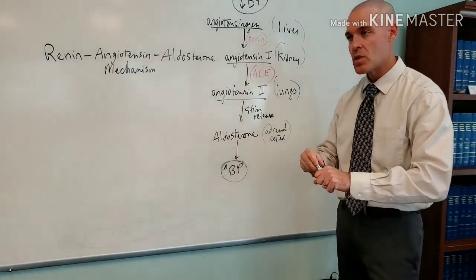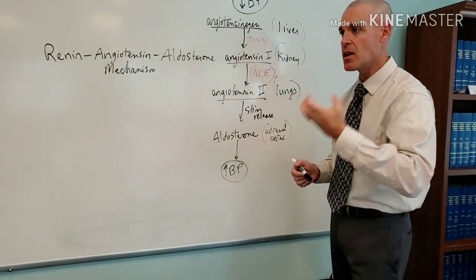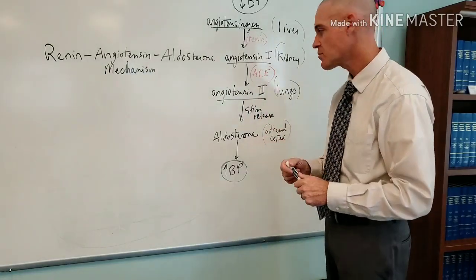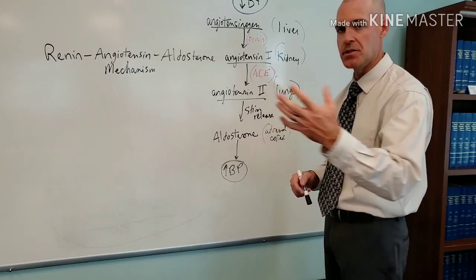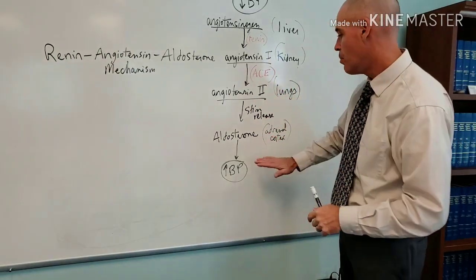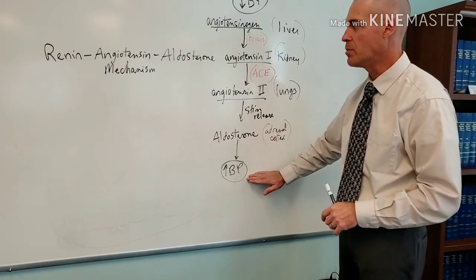Some other things happen too. There's a triggering of thirst, and you taking in water helps increase blood pressure as well. That would be secondary, but it does happen. It triggers thirst in the hypothalamus. But the big thing that aldosterone is going to do is raise blood pressure. So this is an elaborate mechanism that takes place any time you have a drop in blood pressure.